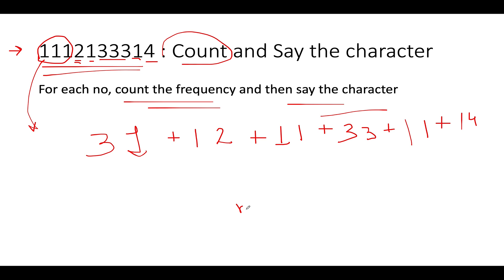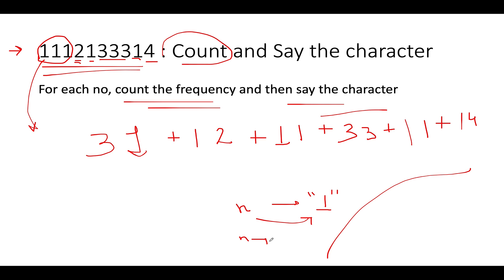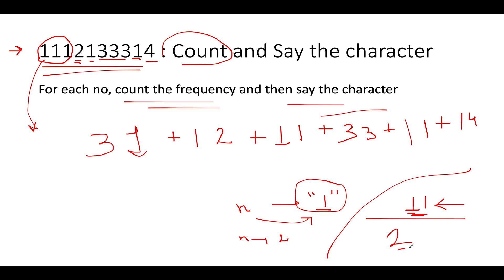You are given integer n; the starting element is '1' and n will always be greater than one. Let's generate a few sequences. For n=1 the answer is '1'. For n=2, we apply count and say to '1': one occurs one time, so it becomes '1 1'. Taking '1 1' as the reference, one occurs two times, so n=3 gives us '2 1'.